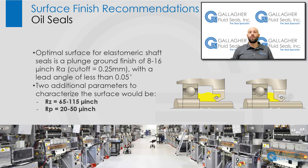Now, let's move on to rotary applications with oil seals. The ideal surface for elastomeric shaft seals is a plunge ground finish of 8 to 16 micro-inch RA with a cutoff of 0.25 millimeters and a lead angle of less than 0.05 degrees. Two additional parameters to control and monitor would be an RZ range of 65 to 150 micro-inch and an RP range of 20 to 50 micro-inch.